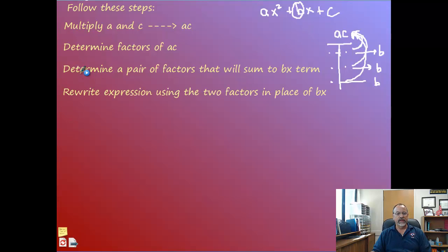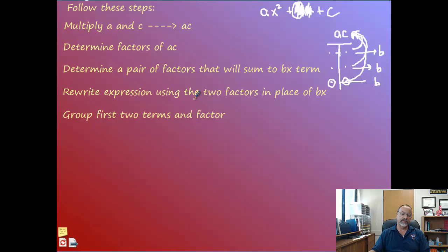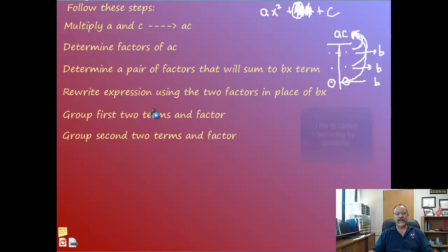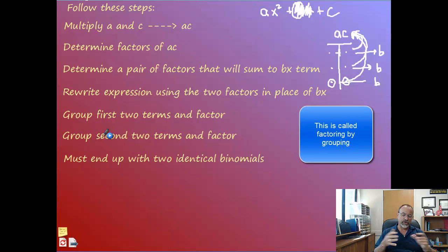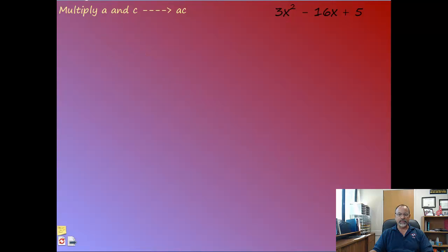Once you figure out which pair works, rewrite the expression ax² + bx + c. Instead of using bx, you replace it using the two numbers you found — since they add to b, you haven't changed anything. Then factor the first two terms of that new expression, and factor the second two terms. What should happen is you get two binomials in parentheses that are identical inside. If they match, you've done it correctly, and you can use the distributive property to find the factored form.